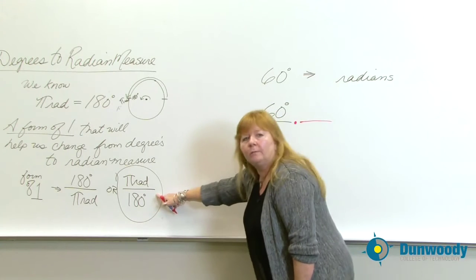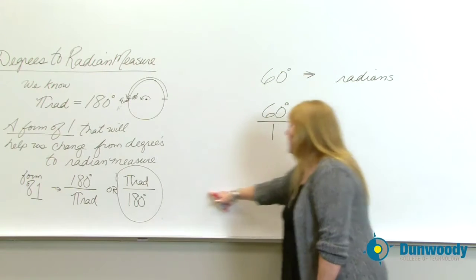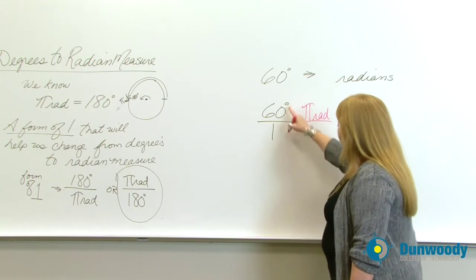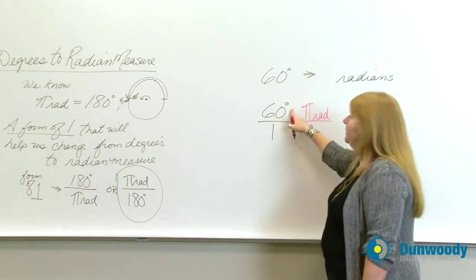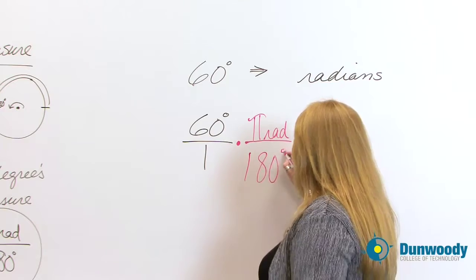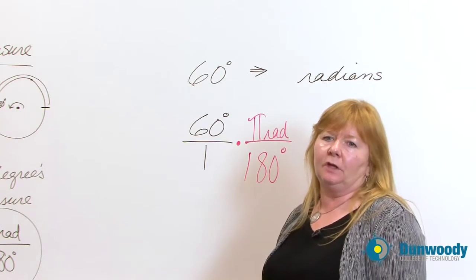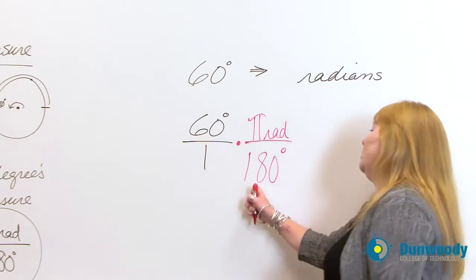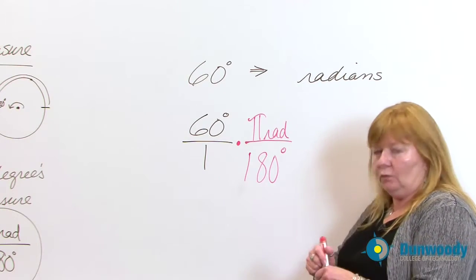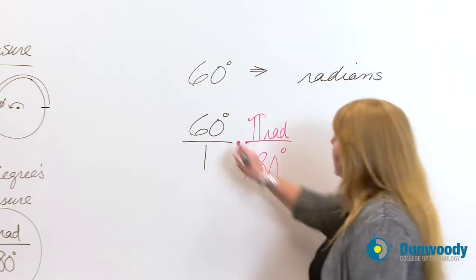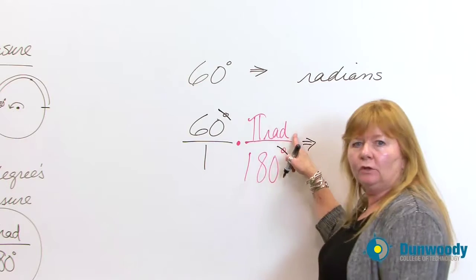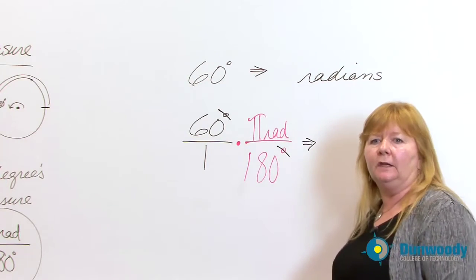Notice this form of one is going to allow me to bring radians in and get rid of the degrees. If degrees are up in the numerator and you need to cancel them out, then you need to have the degrees in the denominator to be able to do the canceling. This is a form of one. It works as a power tool to allow me to get rid of the degrees and bring radians into the mix now.